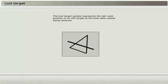The lost target symbol represents the last valid position of an AIS target at the time data ceased being received.